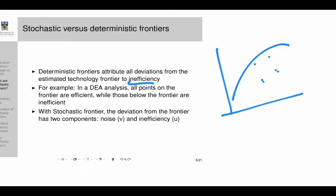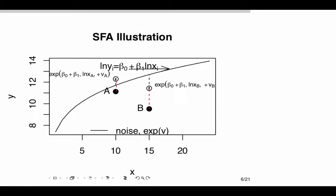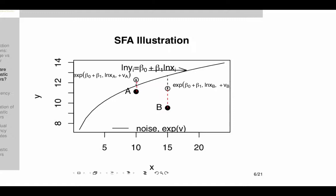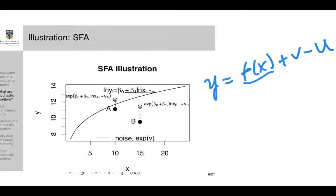With the stochastic frontier, deviations from the frontier have two components: noise, typically written as V, and inefficiency, typically written as U. When you have a production function, there is the function — which could be quadratic — and then you have the noise term and the inefficiency term. The deviations from the estimated curve are not just because of inefficiency but because of noise as well. If the production function is in log form, we have f(x), and the deviations from that frontier have two components: V and U.